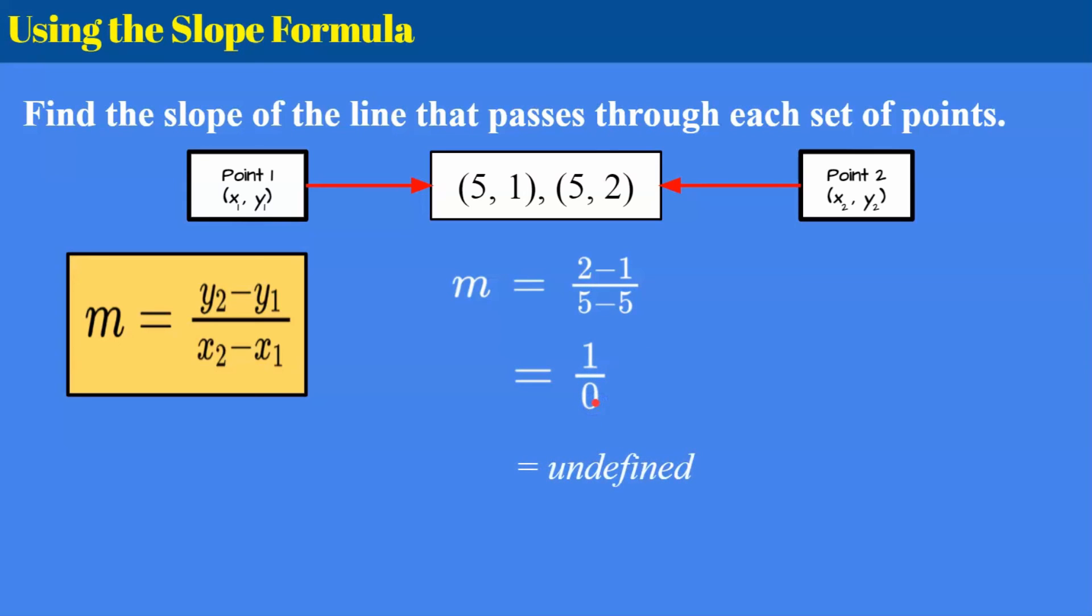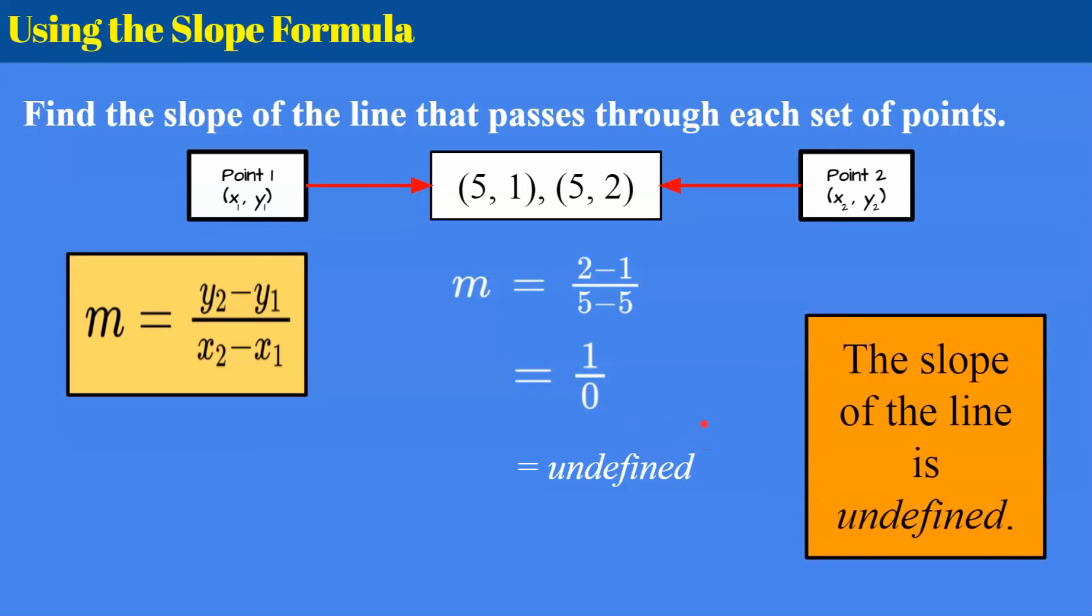1 divided by 0 is undefined. If I have one cookie I cannot make zero groups. You cannot divide by zero so you have an undefined slope, which you will soon learn if you haven't already that this represents a vertical line in the coordinate plane.